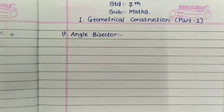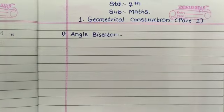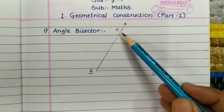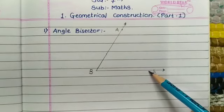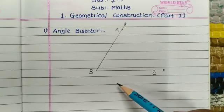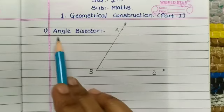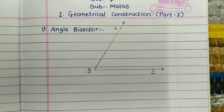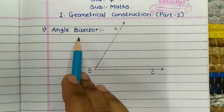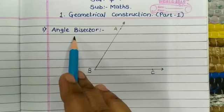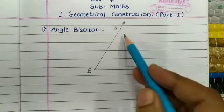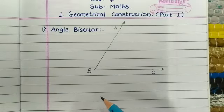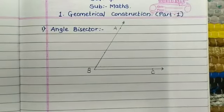Now see, this is angle ABC of 60 degrees and we have to draw the angle bisector. What is an angle bisector? An angle bisector is the line which divides the angle into two equal parts. Now see how to construct an angle bisector.